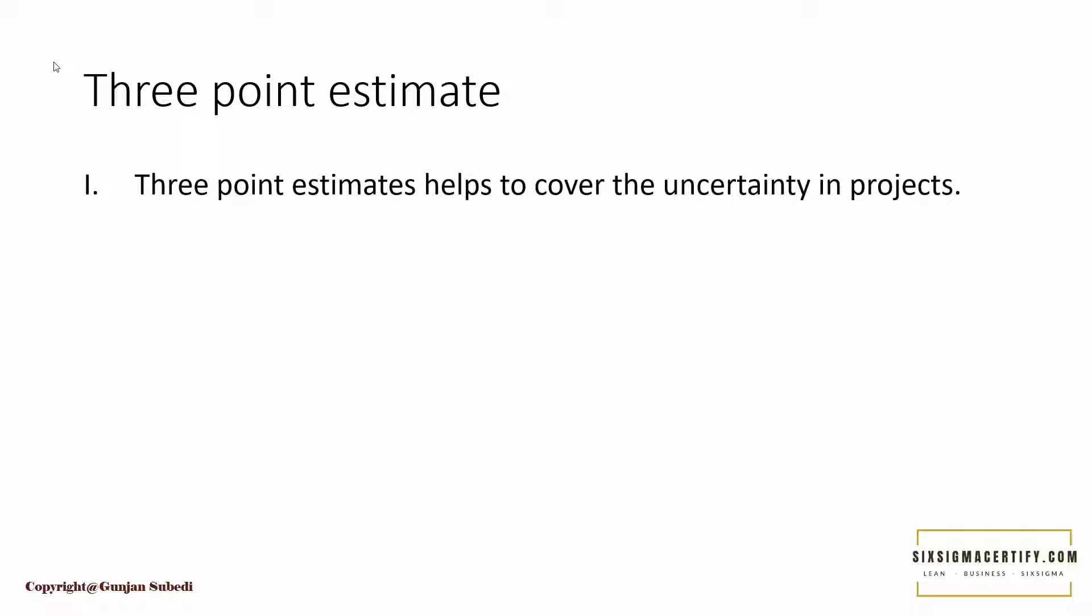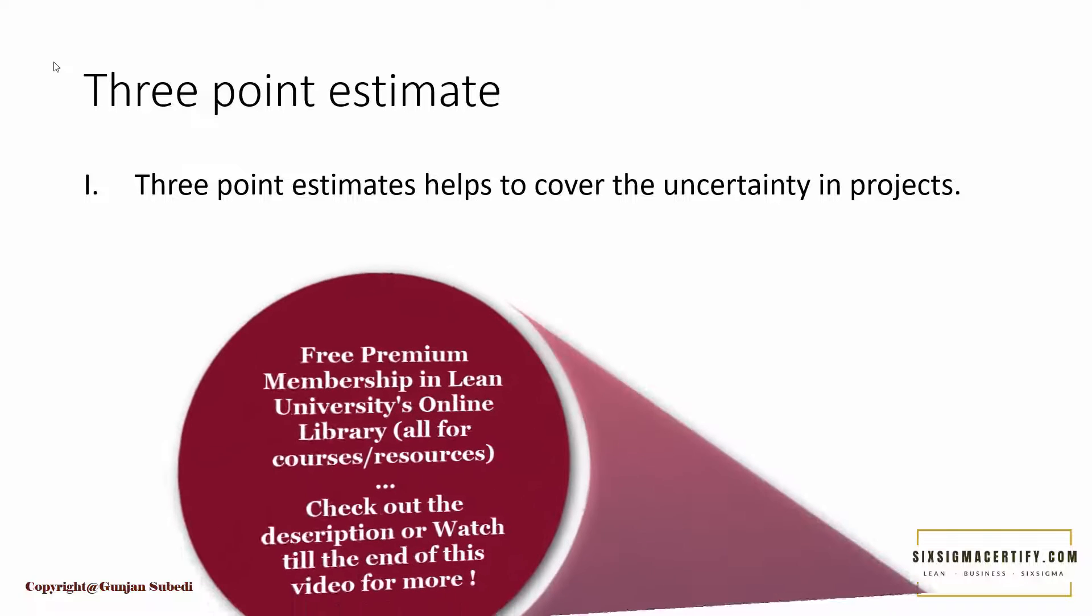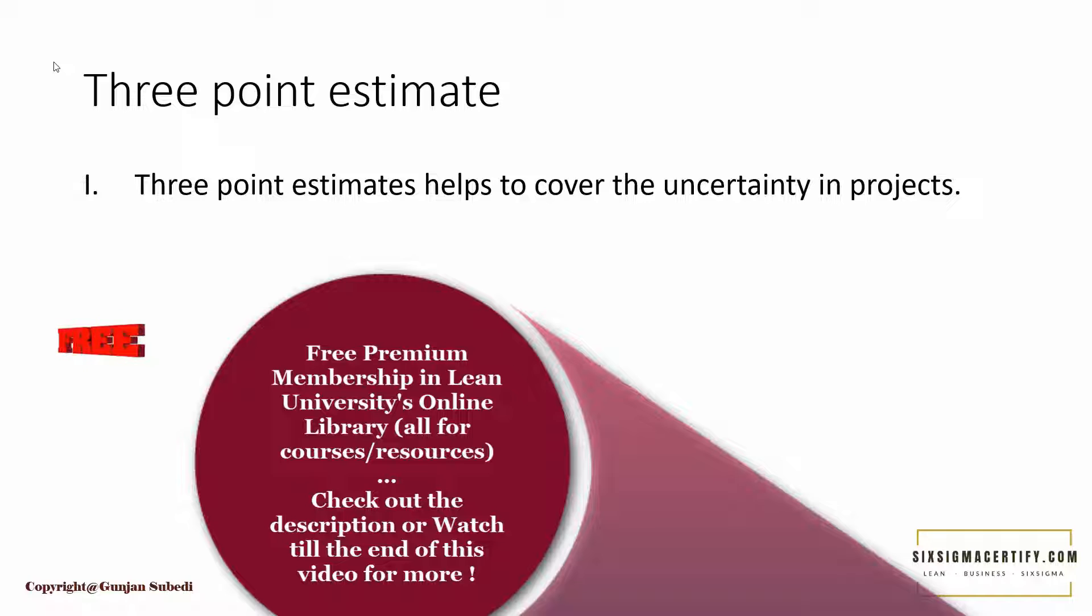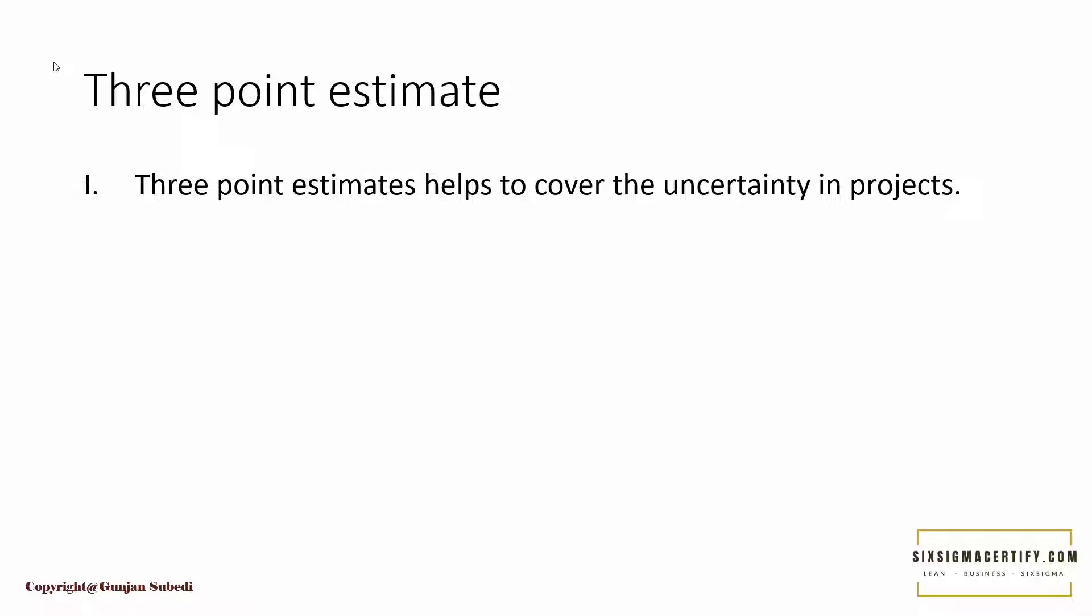Three point estimates help to cover the uncertainty in projects. This is generally true if you are in a new project where you do not have any historical data. If you do not have any kind of historical data, you have to predict what is the most likely and what is the least likely, or what is the optimistic and pessimistic scenario of prediction. Three point estimates help to cover the uncertainty in projects.